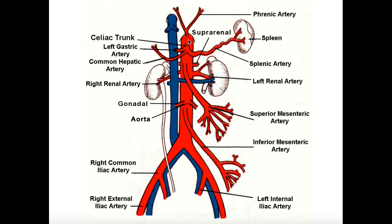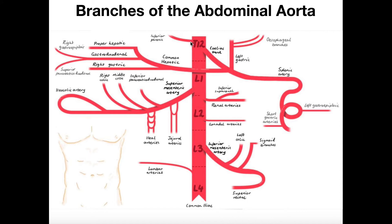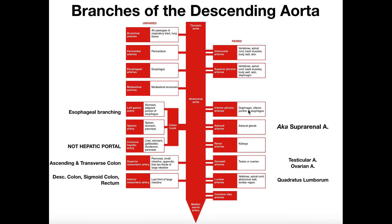Looking above the celiac trunk, we have the inferior phrenic arteries. When you hear the term phrenic, associate that with the diaphragm — so these arteries serve the diaphragm. They're the only ones we'll look at that originate above the celiac trunk. In some models, like wire models, the phrenic arteries may not even be present. On this picture, we can see the patient's right inferior phrenic artery going up to serve the right part of the diaphragm.